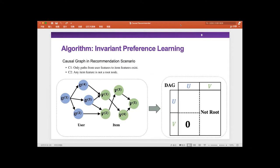To realize our idea, we consider utilizing the causal graph structure into the recommendation scenario to bring its invariant mechanism as well as its credibility to benefit our problem. Compared to a general causal graph, we think the causal graph which describes how users like items should meet two constraints. The first is that user behaviors are generated from the user itself, so only the path from user features to item features exists. The second is that any item is designed for humans, so any item feature should not be a root node. We use these two constraints to reduce the search space of the whole causal structure, which promotes our results.